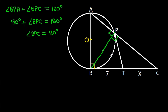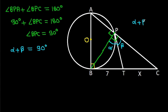Now, suppose this angle is alpha and this angle is beta, then we have alpha plus beta equals 90 degrees.